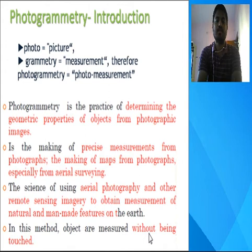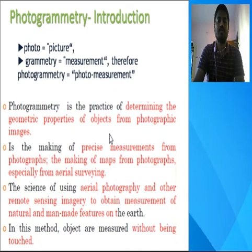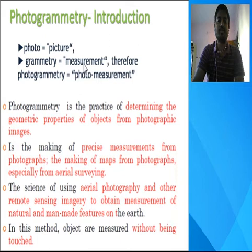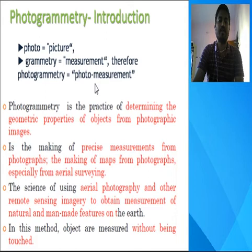First of all, the introduction of aerial photogrammetry. 'Photo' means a picture in a pictorial format. 'Grammetry' means measurements of different objects — elevation, distances, area, etc. Therefore, photogrammetry is nothing but photo measurements. In the form of photo measurements, we can collect information about the object, about the area, about the terrain on the surface of the earth.